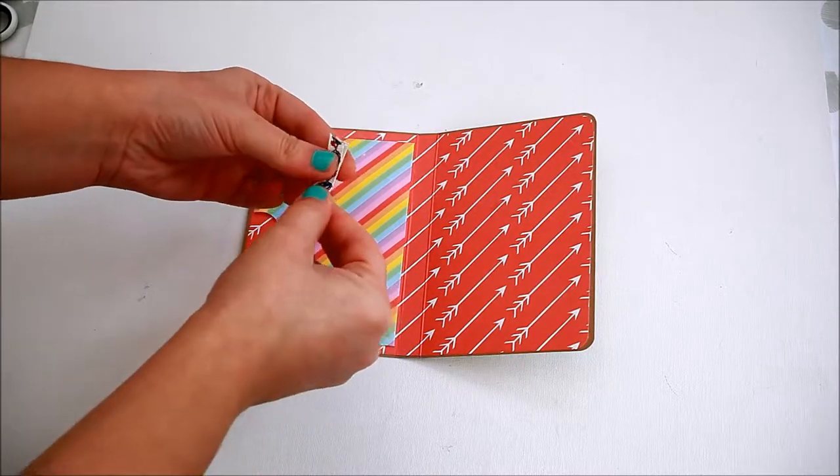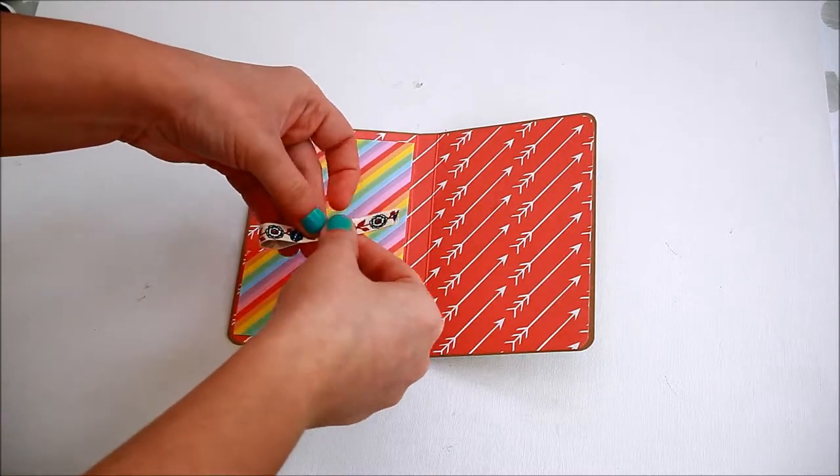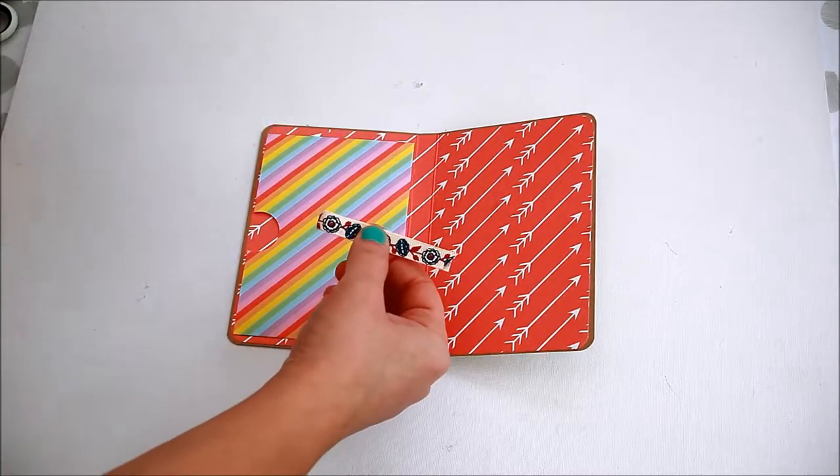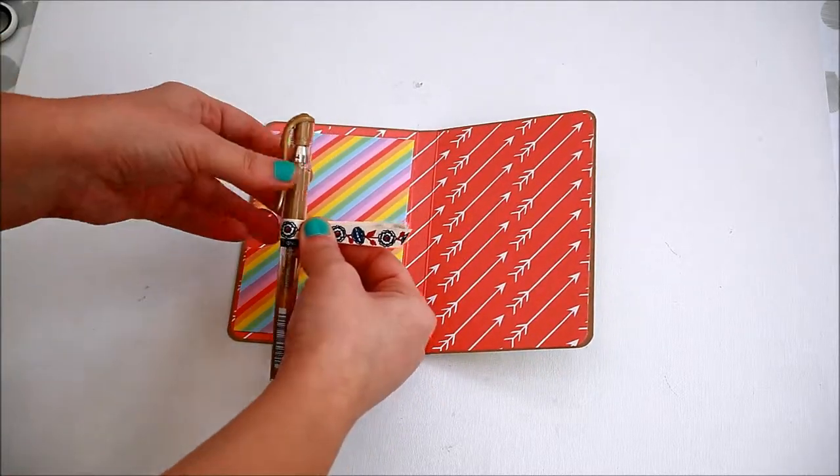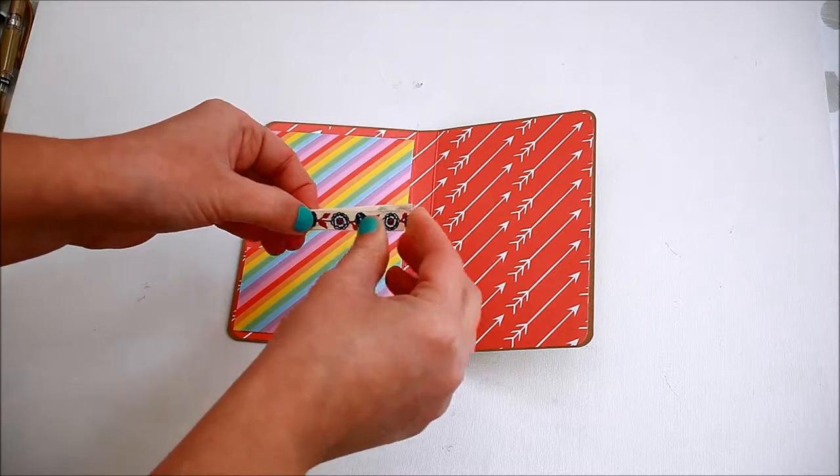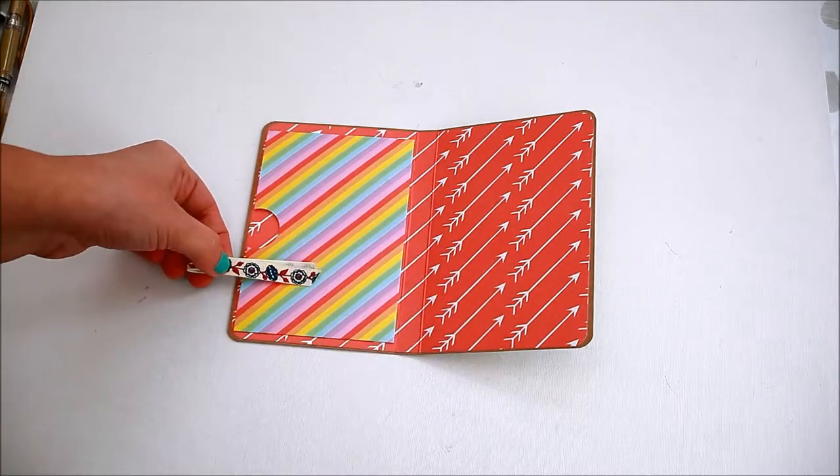Cut a piece of ribbon. Mine measures around five and a half inches. Fold it in half and decide how big you want the loop to be, then glue it together. This will be the pen holder.